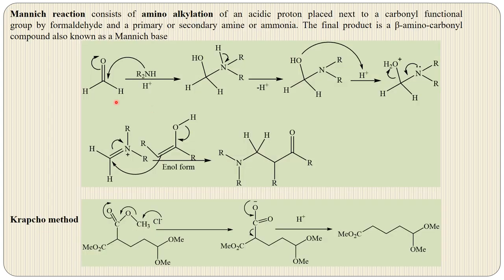Before going further, let's review the Mannich reaction and its mechanism. There are three components: an aldehyde, ammonia or its derivative (primary or secondary amine), and a ketone. In two steps, water is removed and an iminium ion is formed. When this iminium ion reacts with the enol form of the ketone, the Mannich reaction produces the Mannich base, which has a nitrogen or derivative of ammonia on the beta carbon of the ketone.